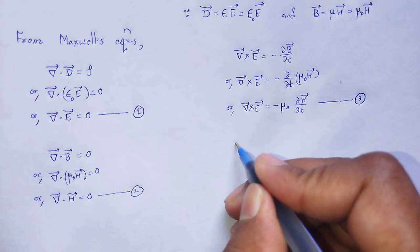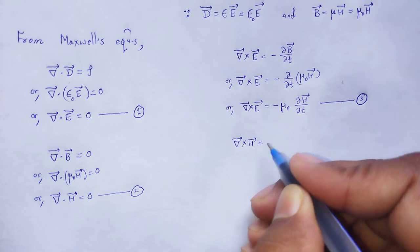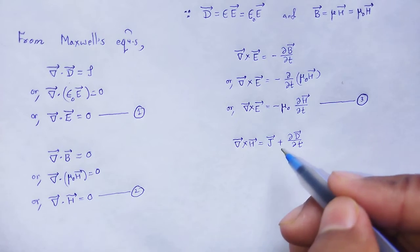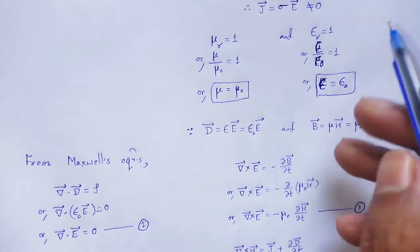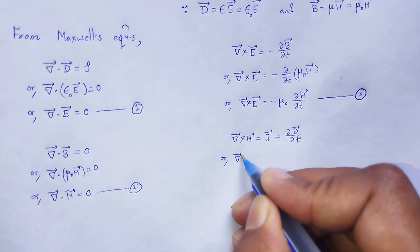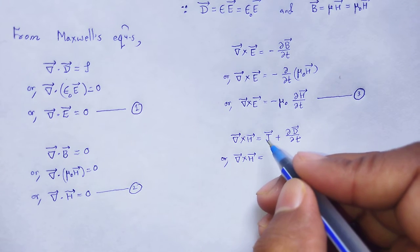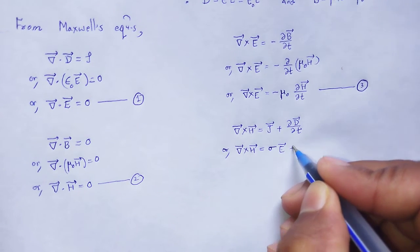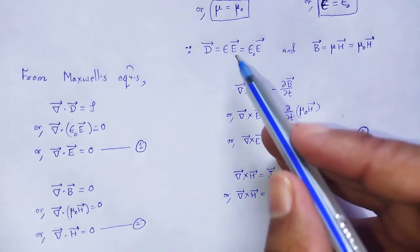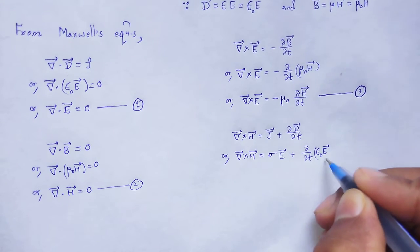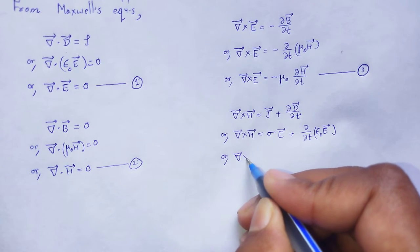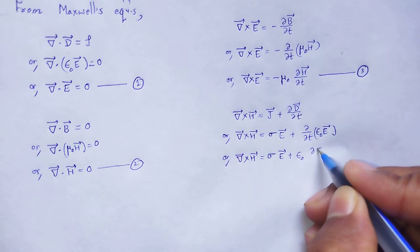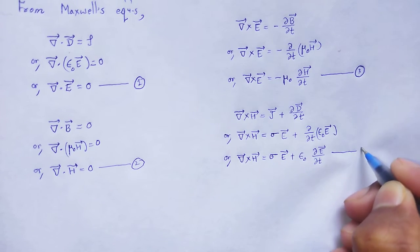Maxwell's fourth equation: grad cross H equals J vector plus del D by del t. Since J vector equals sigma E vector and is not equal to zero, we substitute to get grad cross H equals sigma E vector plus epsilon_0 del E vector by del t — equation number 4.